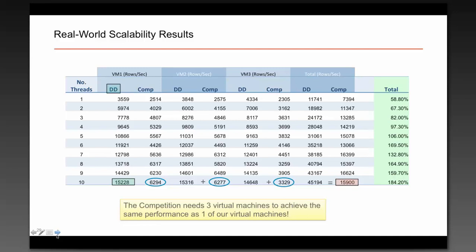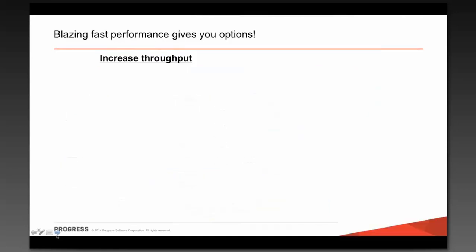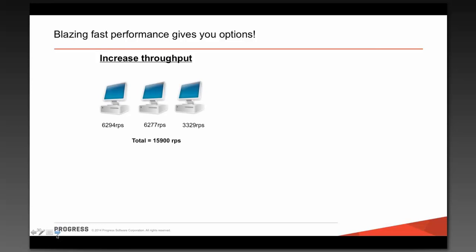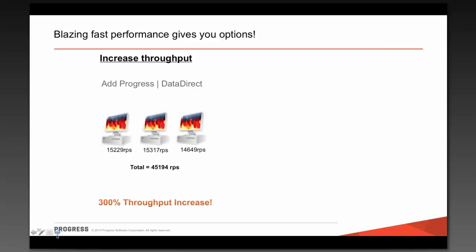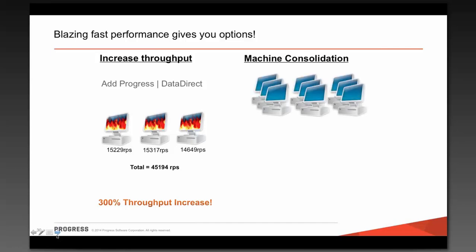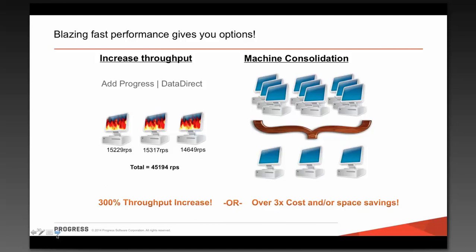What does this mean? Performance really gives you options. You want to make choices based on the performance of the software you're using. One option is to increase throughput: say you had three machines running just under 16,000 rows per second — you could switch out the connectivity and get a 300% throughput increase. On the other hand, we've had customers who wanted to do machine consolidation. The throughput they had was fine, but they were running out of space or generating too much heat for their AC system. Those are places where you can switch out, move to a smaller number of machines or virtual machines, and get those cost savings.